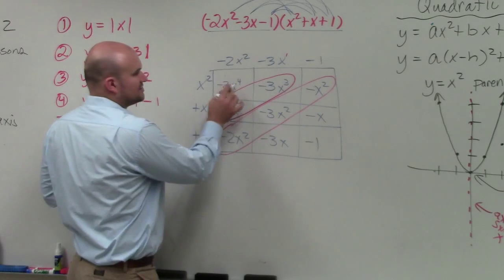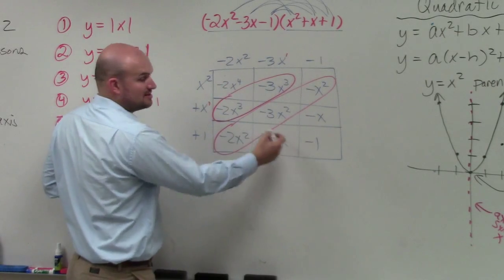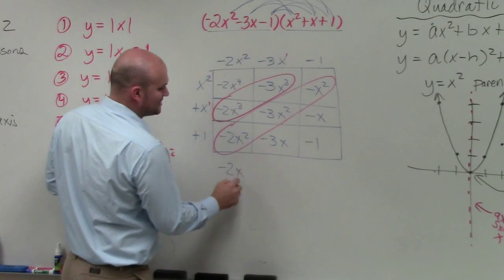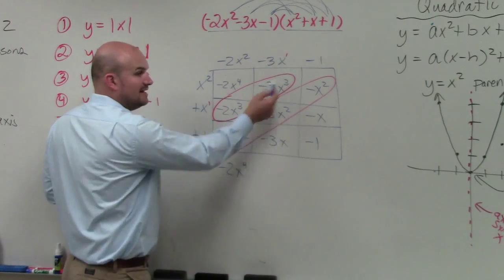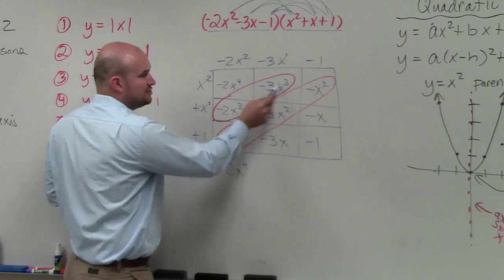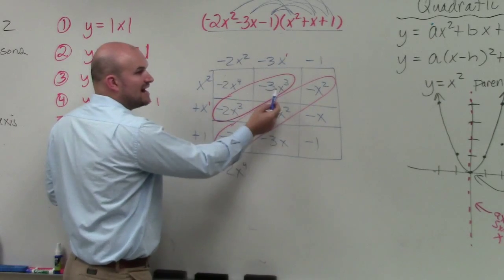So now, there's nothing that adds with negative 2x to the fourth, none of these other boxes. So negative 2x to the fourth. Then here, you can see I have two terms, two areas, that have x cubed. So I can combine them.